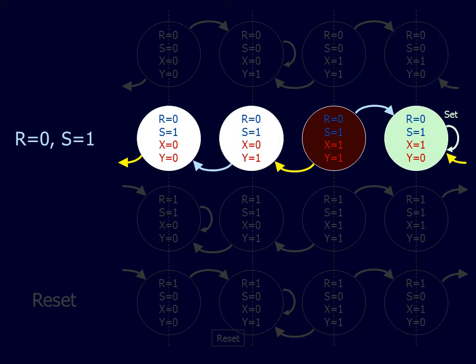The R equal 0, S equal 1 input state forces the primary output X to 1. This is therefore the output set function.